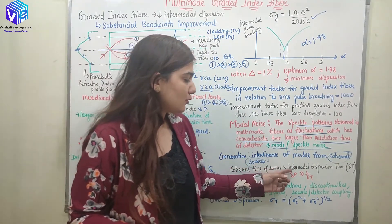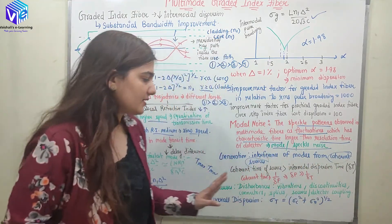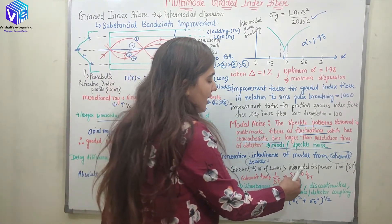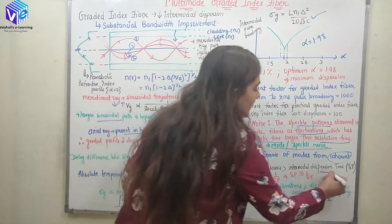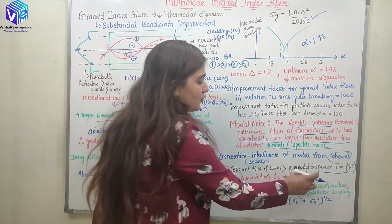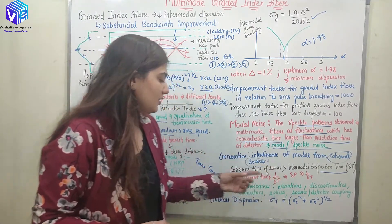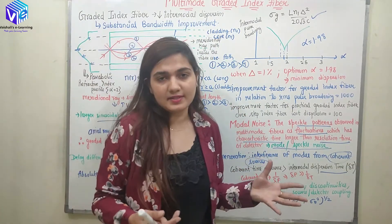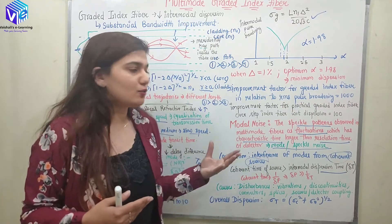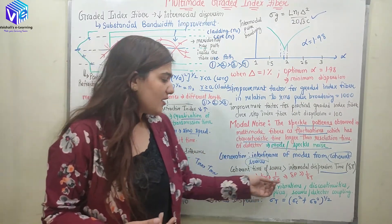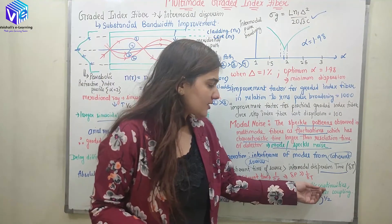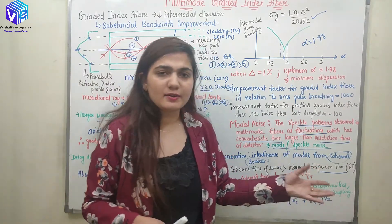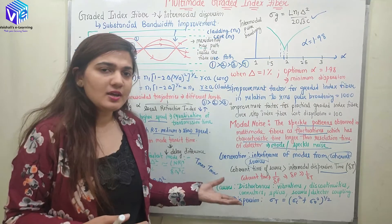The coherent time of the source is greater than the intermodal dispersion time delta_t. Coherent time = 1/delta_f, and the condition to generate modal noise is delta_f > 1/delta_t. The causes are various disturbances: vibrations, discontinuities between core and cladding, connectors, splices, and source-detector coupling — all of these generate modal or speckle noise.